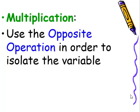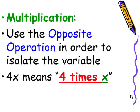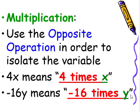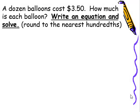Multiplication: Use the opposite operation in order to isolate the variable. Remember, 4x means 4 times x. Negative 16y means negative 16 times y. When we take a look at this particular problem, a dozen balloons cost $3.50. How much is each balloon?